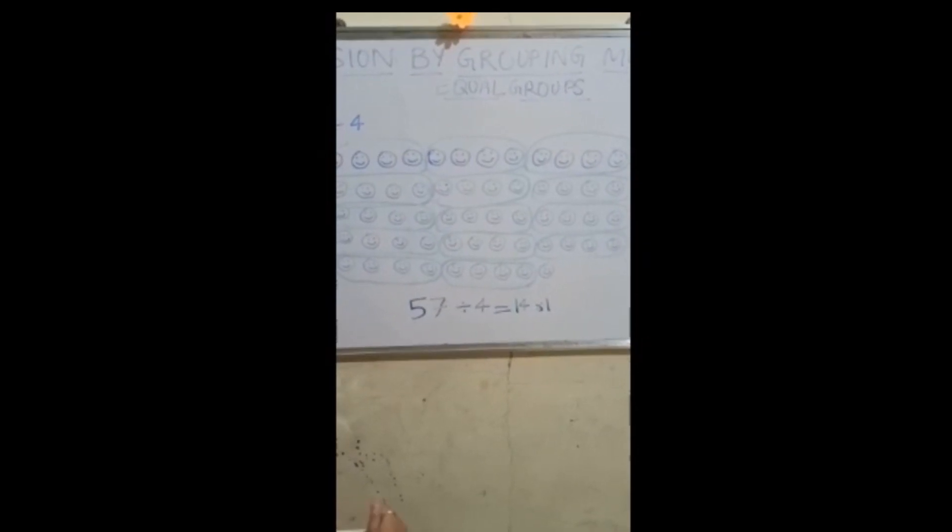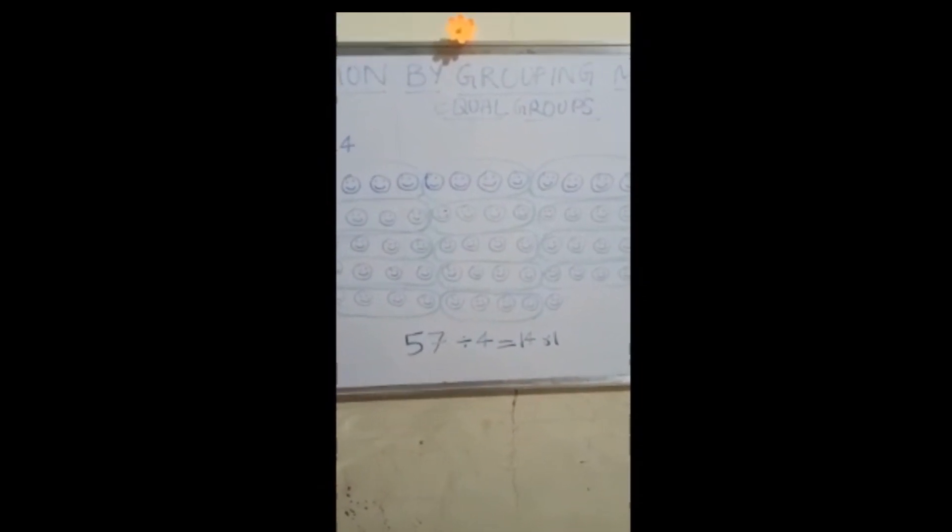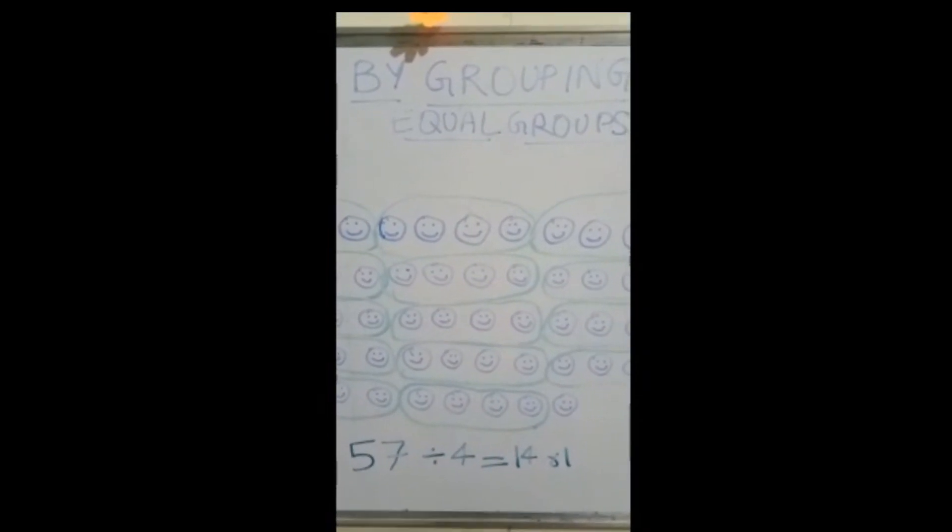Fifty-seven divided by four is equal to 14 and one remainder.